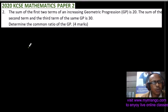This is question number two. The sum of the first two terms of an increasing Geometric Progression (GP) is 20. The sum of the second term and the third term of the same GP is 30. We are told to determine the common ratio of the GP, and you get four marks.